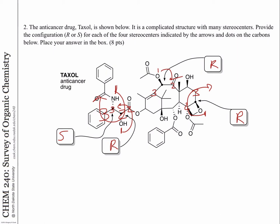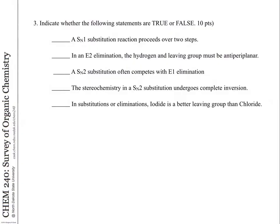Any problems doing that? If you want more practice, go and assign the configurations for all the other stereocenters. Now, I think one of these questions caught people a little off guard. Maybe I didn't cover it enough in class, but this is talking about substitution reactions and elimination reactions and whether these are true or false. An SN1 substitution proceeds over two steps — and that's true. You form a carbocation and then you add the nucleophile in the second step. In E2 elimination, hydrogen and the leaving group have to be anti-periplanar — 180 degrees apart on adjacent carbons. We need that alignment for the one-step elimination reaction to proceed. So that's true.